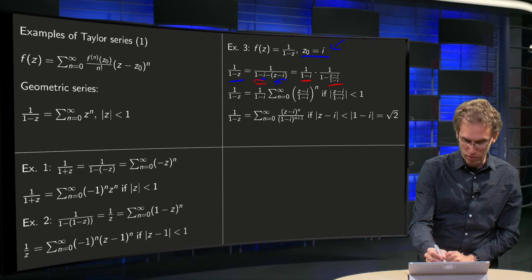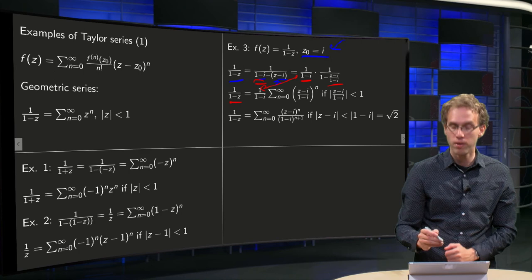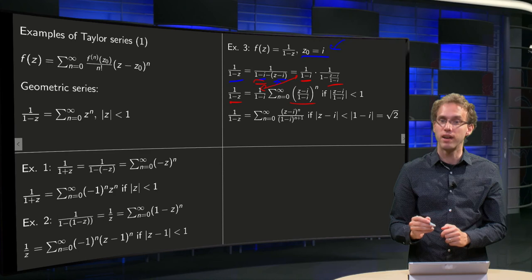So 1/(1-z), just keep this constant prefactor over here. 1/(1-rubbish) equals sum rubbish^n if the norm of this rubbish is smaller than 1.